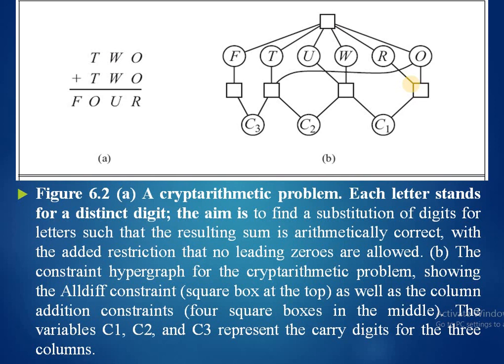The constraint hypergraph shows the allDiff constraint as a square at the top, the four column addition constraint squares in the middle, and C1, C2, C3 as the carry digits.